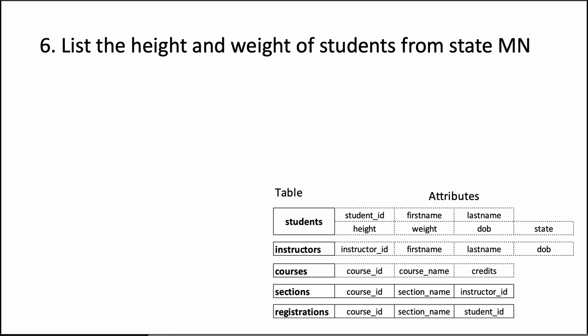This question continues the same theme of looking for specific columns or attributes for rows that satisfy a specific condition. This time we're saying list the height and weight of students from the state Minnesota. The columns we're looking for is very clear: select height and weight. Notice that height I've put the H in uppercase.